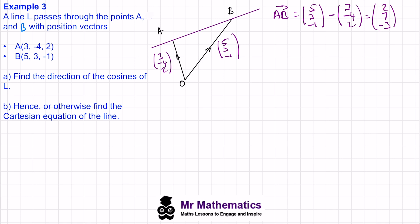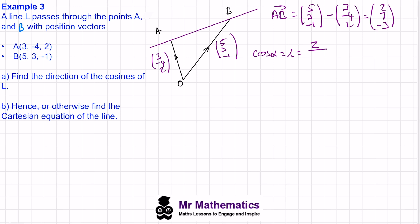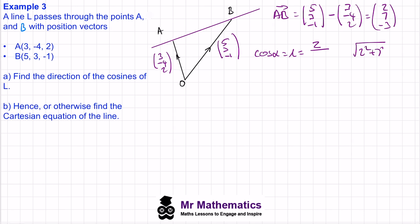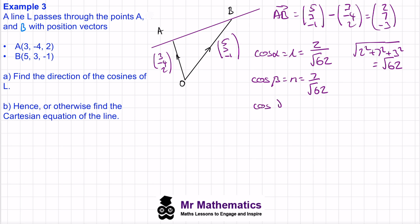We know cos alpha = L = x-component over |V|. The magnitude of the direction vector is √(2² + 7² + (−3)²) = √62. So L = 2/√62. Cos beta = M = 7/√62, which is the y-component over √62. Cos gamma = N = −3/√62. These are our three direction cosines.